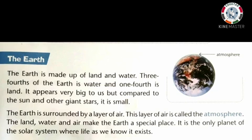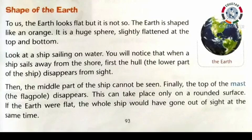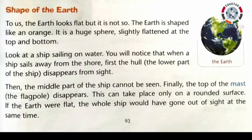It is the only planet of the solar system where life as we know it exists. The Earth is shaped like an orange — it is a huge sphere, slightly flattened at the top and bottom.